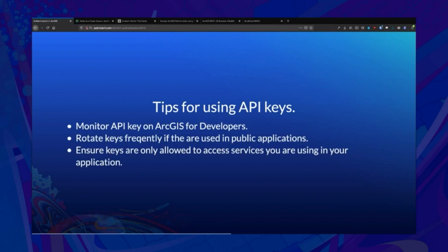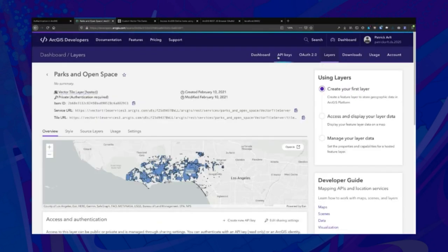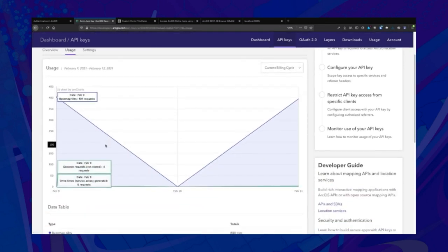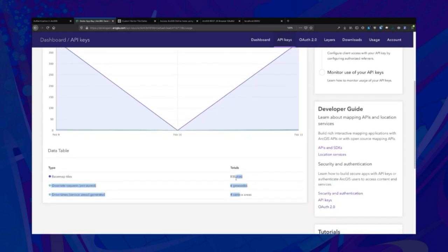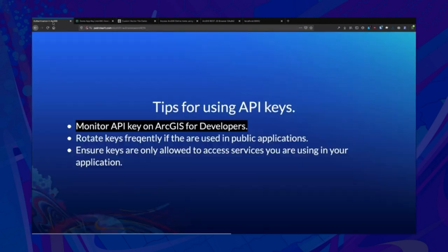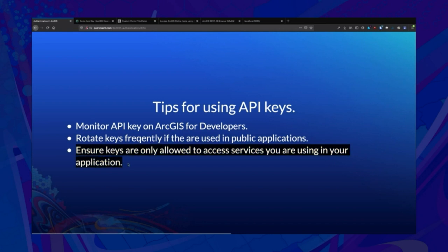When using API keys, we want you to frequently monitor usage and rotate keys if they're in public-facing applications, because the keys are in plain text. I'm going to delete and generate new keys after I record this. You can monitor usage on your individual API keys on the developer site — I can see this demo key is accumulating usage in base map tiles, geocoding, and drive times. We recommend you check it frequently and recreate/delete API keys to keep them well managed. Also ensure that only the services you need are on your API keys, and restrict those referrer headers to help prevent abuse.